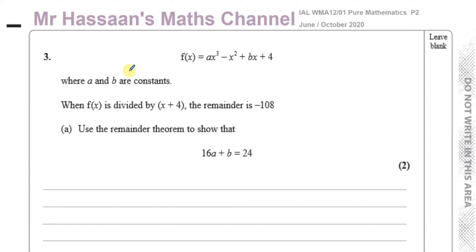It's telling us about a function f(x) equals ax cubed minus x squared plus bx plus four, where a and b are constants. It tells us when f(x) is divided by x plus four, the remainder is minus 108. Use the remainder theorem to show that 16a plus b equals 24.